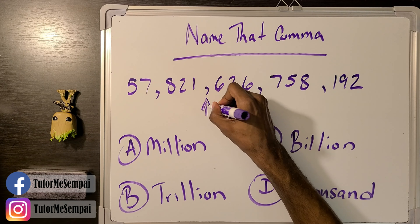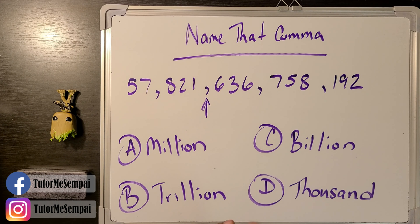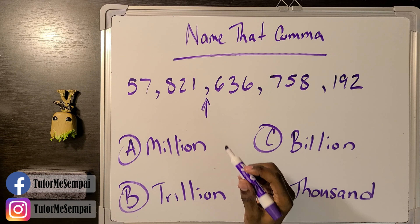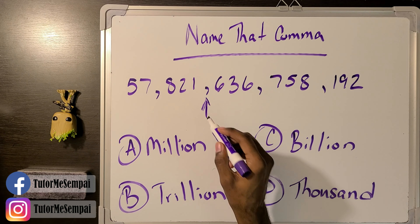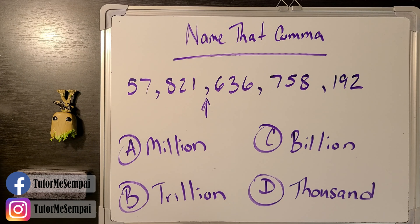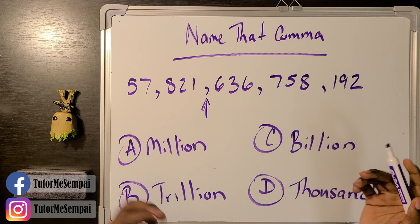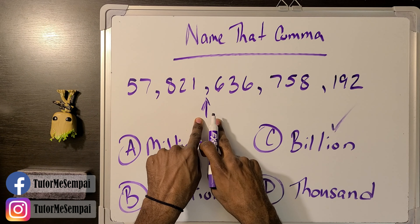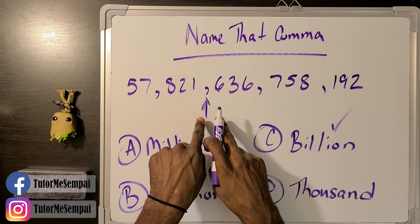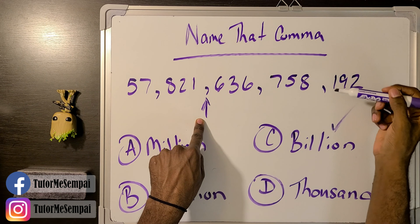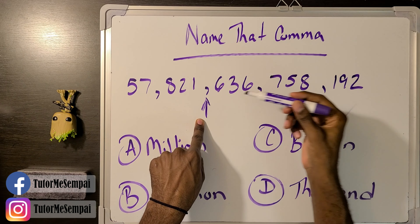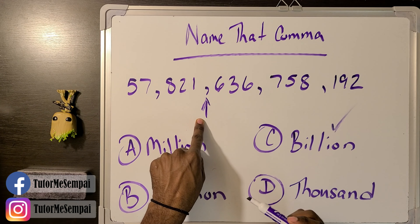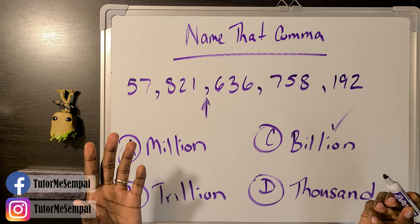Let's jump into naming our first comma. What is going to be the name of this comma here? I'll give you a little bit of time to figure that out. Is it A, B, C, or D? If you said C, you would be correct. This is the billion comma. Going from the right, this is going to be your billion comma.